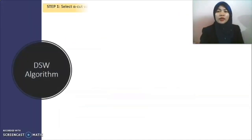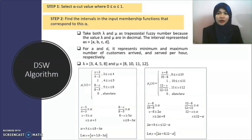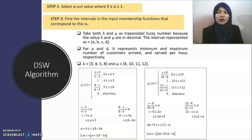We then implement the lambda and mu values obtained into the DSW algorithm. For step one, we select alpha-cut values where they are included between 0 and 1. The alpha-cut represents the possibility that LQ, LS, WQ, and WS will lie within an associated range. For step two, we find the intervals in the input membership functions that correspond to this alpha. We take both lambda and mu as trapezoidal fuzzy numbers because the values of lambda and mu are in decimal.